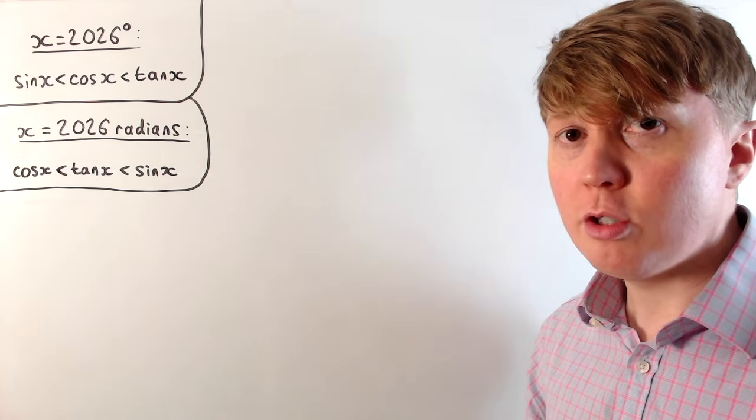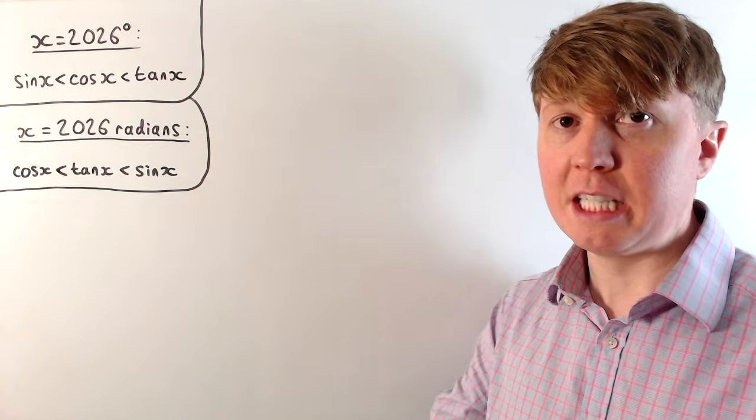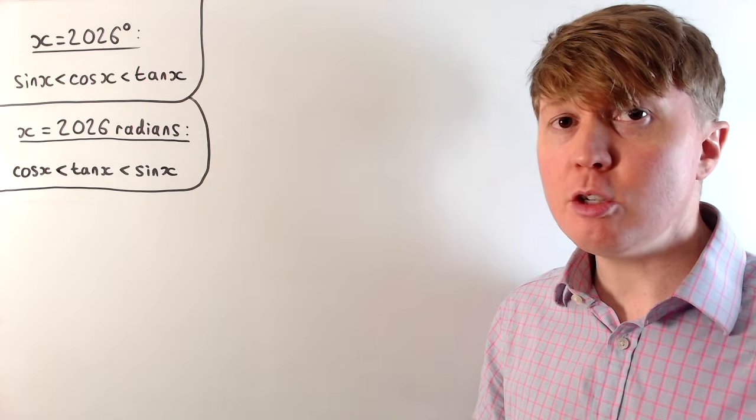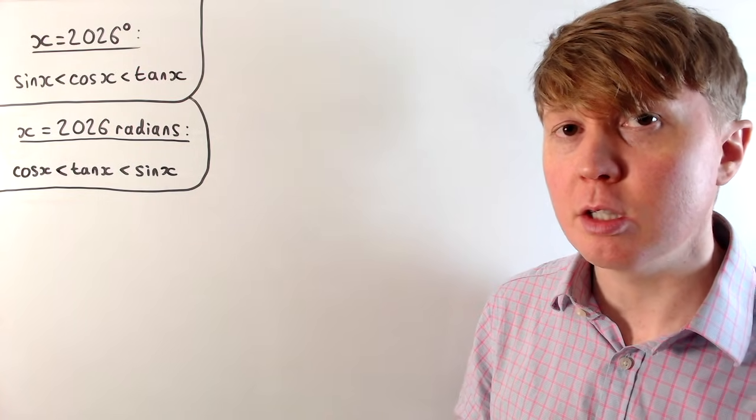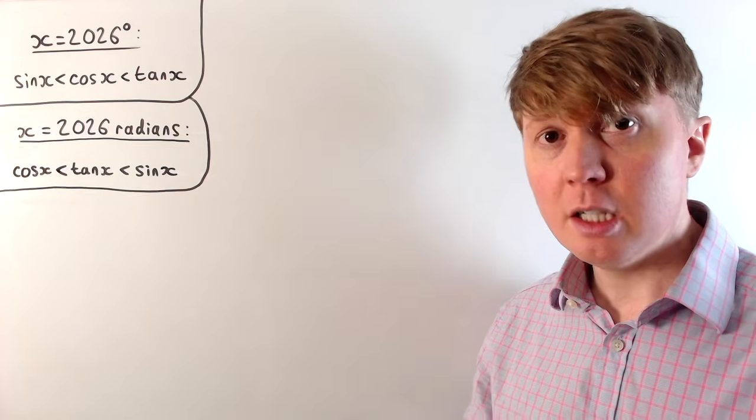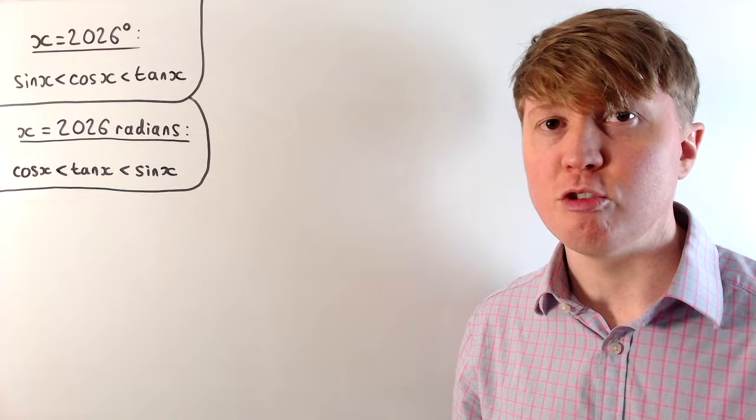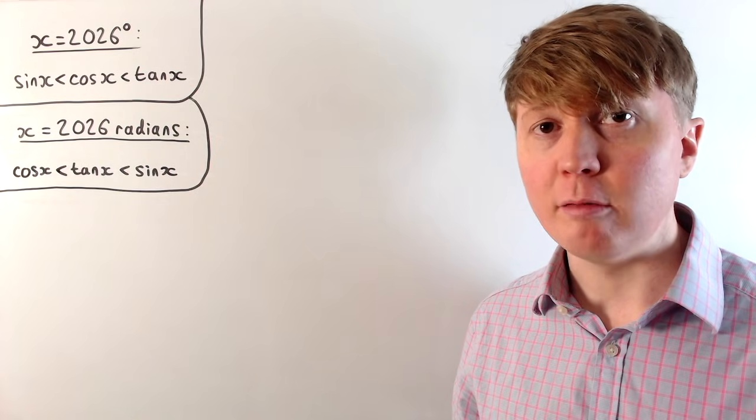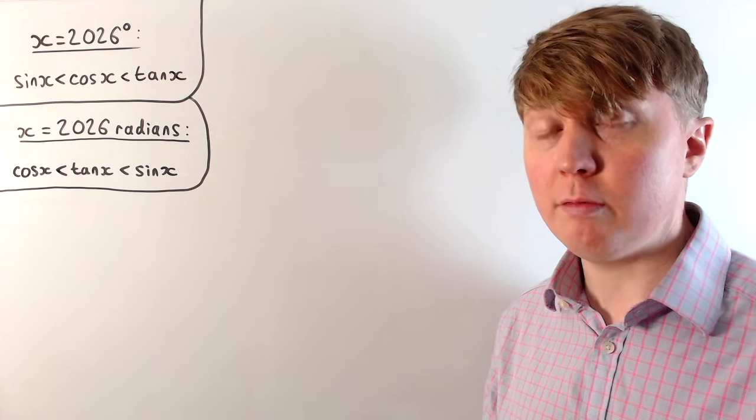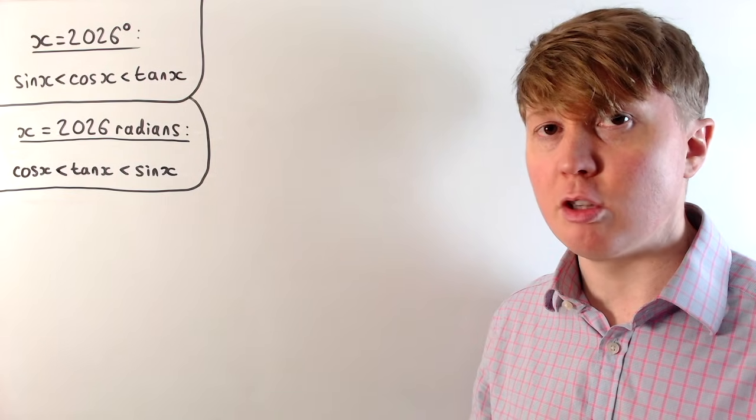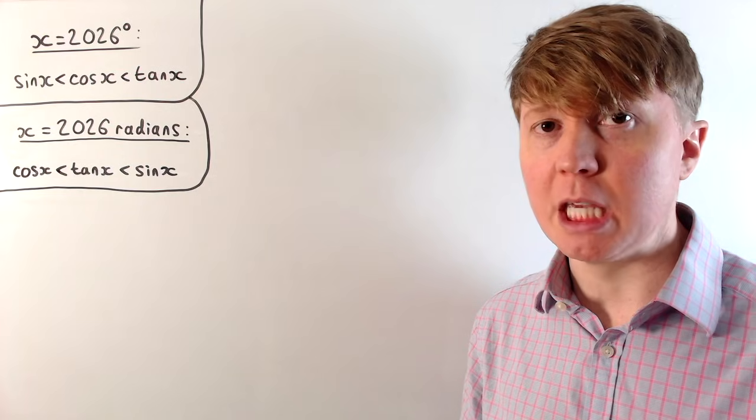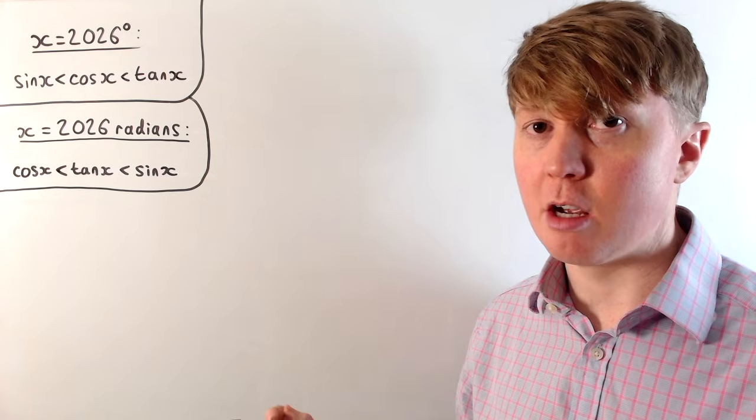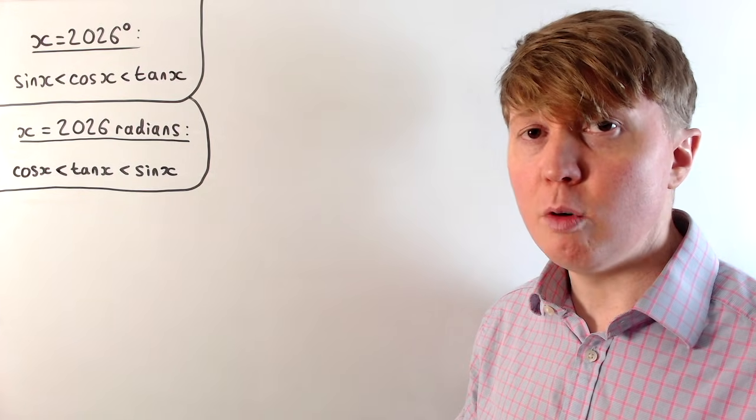Now if we consider the number 2026 working in radians, we actually get a slightly different order. So now we get cos is less than tan is less than sine of 2026 radians. And this order is going to change much more regularly in radians, because in degrees these functions repeat every 360 years, whereas in radians these are only going to repeat every 2 pi years, just over every 6 years. However, because 2 pi isn't an integer, we get quite erratic behaviour with the radians, so it's not going to repeat or follow any nice repeating kind of pattern.